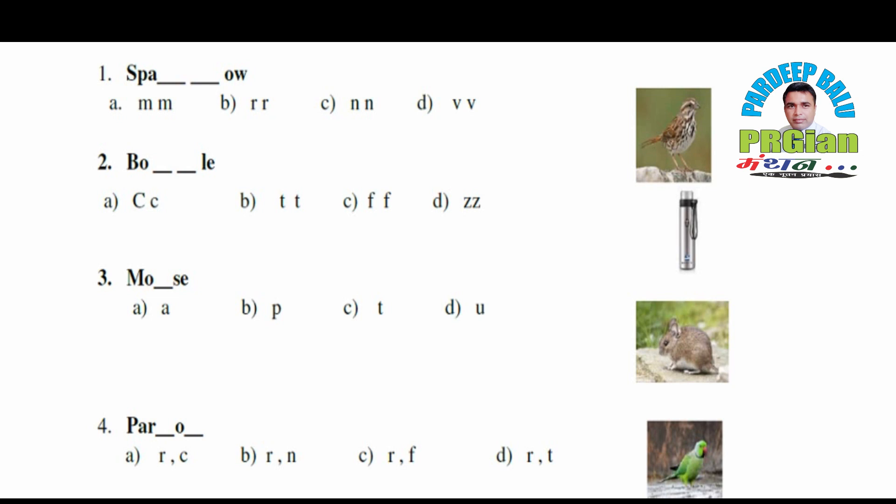Exercise 1. Fill in the blanks with the correct letter. First word is S P A _ _ O W. Here are four options: A is M M, B is R R, C is N N, and D is V V. You need to look at the picture — which object's spelling will be formed? S P A _ _ O W — Sparrow. Yes!